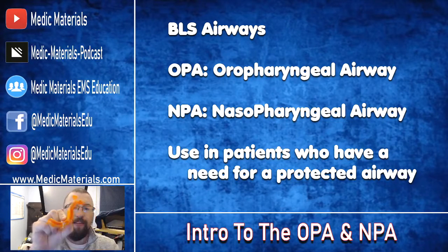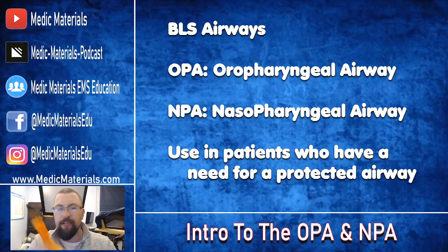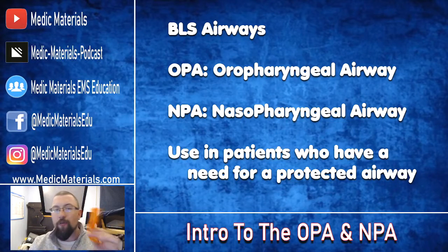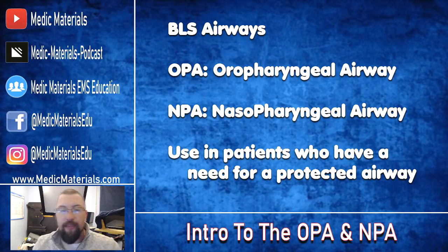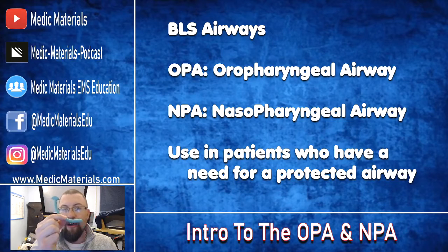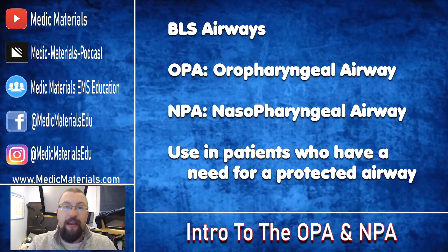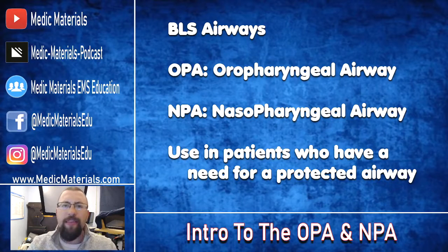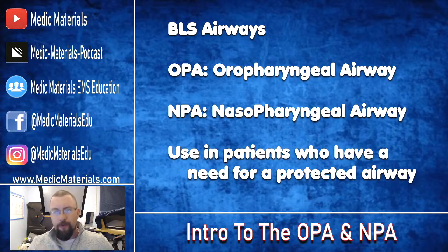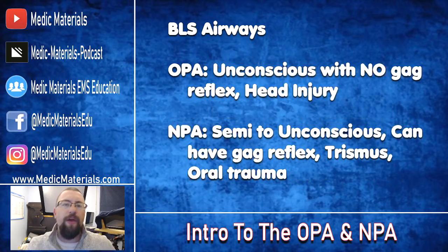The first one is the OPA — this little guy here. These come in sizes from infant all the way up to this one, which is the largest adult. OPA stands for oropharyngeal airway. The NPA, which is the rubber one, again comes in a multitude of different sizes, and that one is the nasopharyngeal airway. These airways are used in patients that need a protected airway.